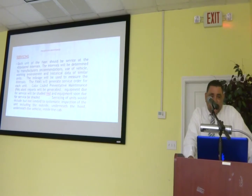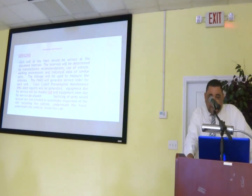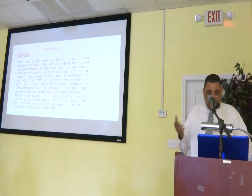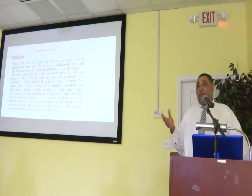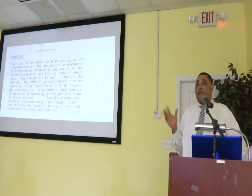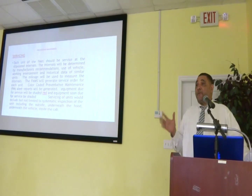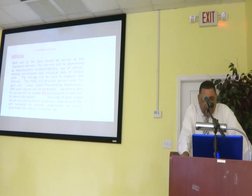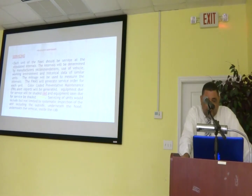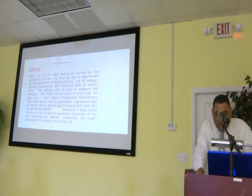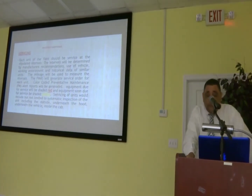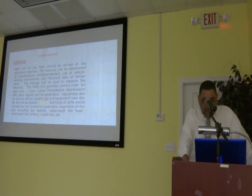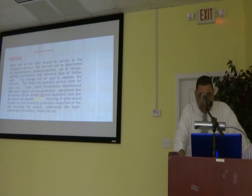Servicing: each unit of the fleet should be serviced at stipulated intervals. The intervals will be determined by the manufacturer's recommendation, the use of the vehicle, the working environment, historical data, or similar units. Normally 5,000 kilometers or 5,000 miles — each vehicle must be serviced within that, and I mean full service, not just changing the oil filter. The fleet management system will generate service orders for each unit. Color-coded preventative maintenance alert reports will be generated: equipment due for service shaded red, equipment soon to be serviced in yellow. Servicing includes systematic inspection of the unit — outside, underneath the hood, underneath the vehicle, inside the cab.